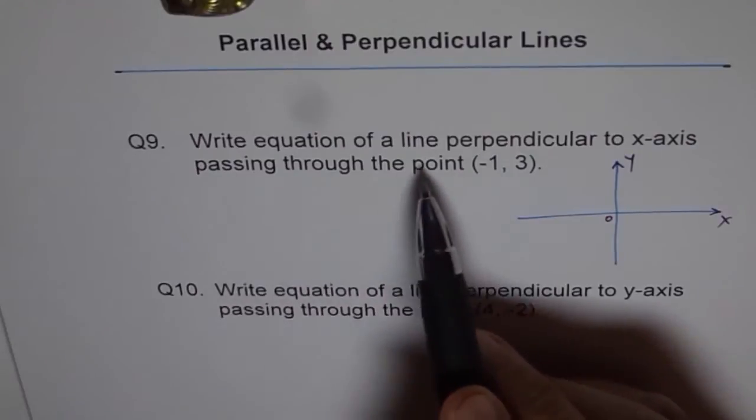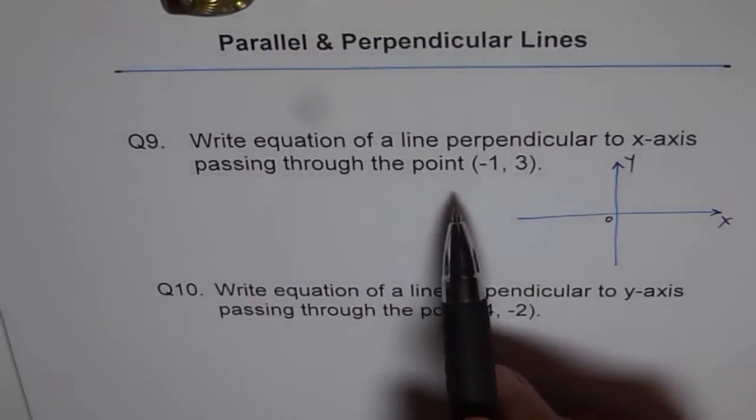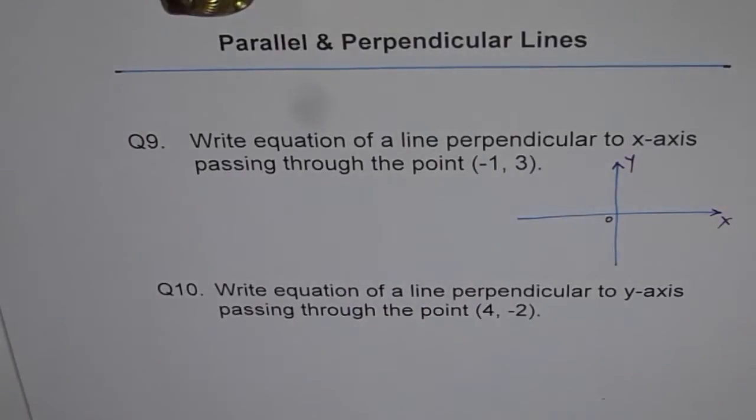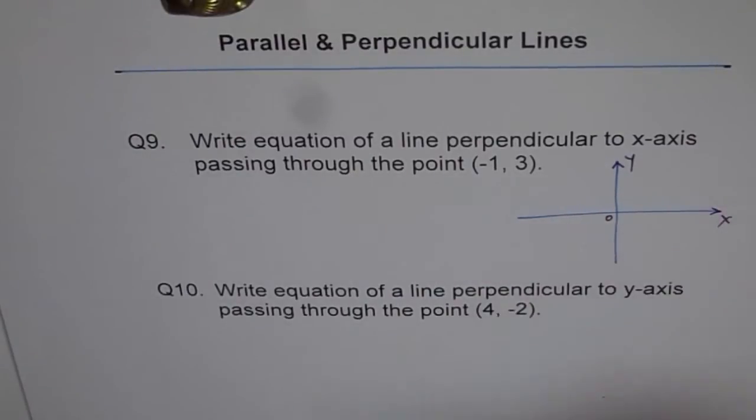Now it says write equation of a line perpendicular to x-axis but passing through the point (-1, 3). So that means the point minus 1 is here and 3 is somewhere here, right? Something here.